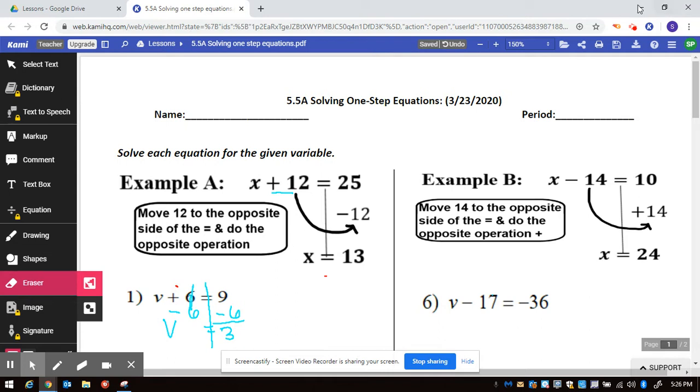Now, example B says move 14 to the opposite side using the opposite operation. So again, I want to point out that you're trying to get all the numbers away from x. And so the opposite of minus 14 is to plus 14.